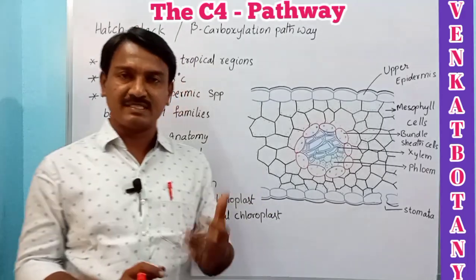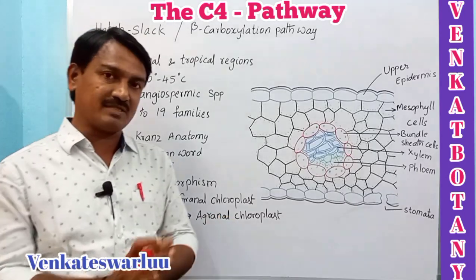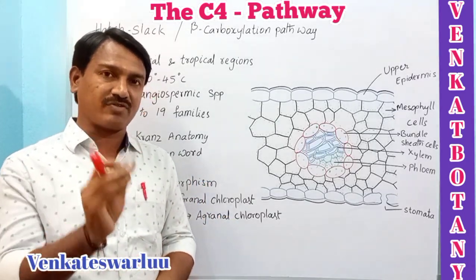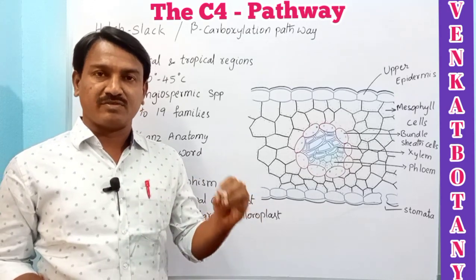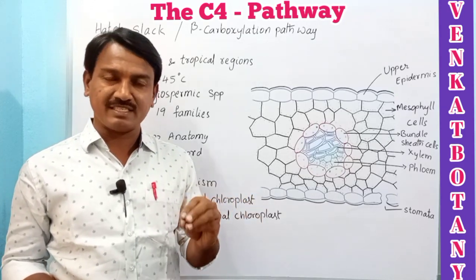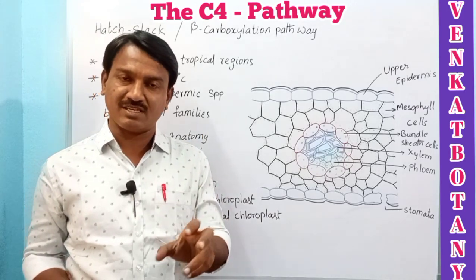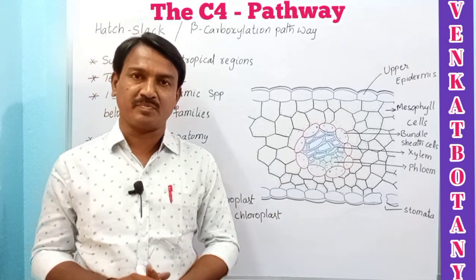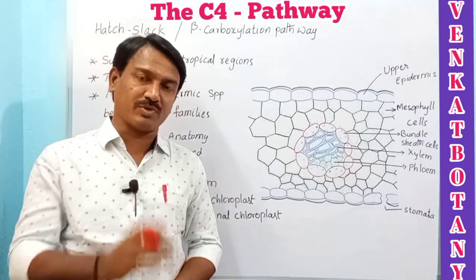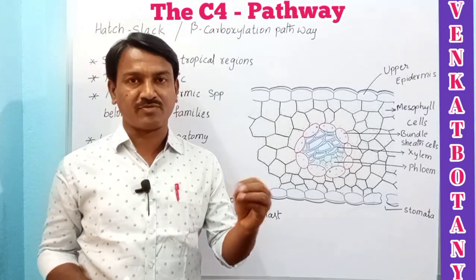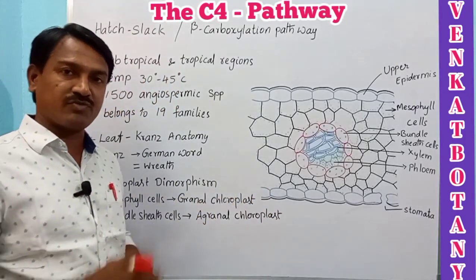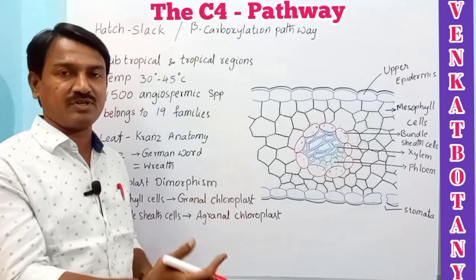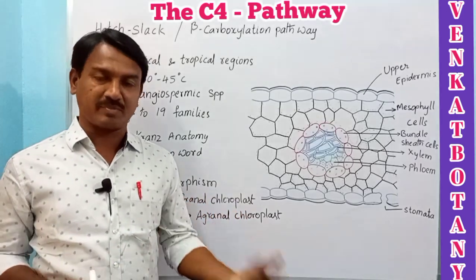In the process of photosynthesis, carbohydrates are formed. If the first stable compound formed in that process contains three carbon atoms, it is called the C3 pathway, and those plants are called C3 plants. If the first stable compound contains four carbon atoms, those are called C4 plants and the process is called the C4 pathway.